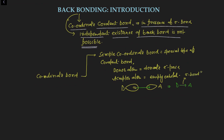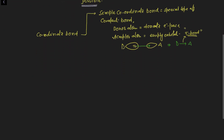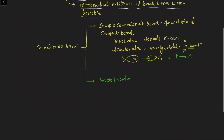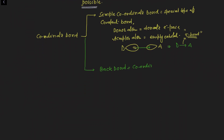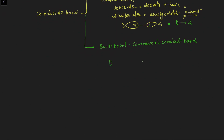The second type of coordinate bond is back bonding. A back bond is a coordinate covalent bond that always forms between two atoms in the presence of a sigma bond. Suppose this is the donor atom and this is the acceptor atom — there is a sigma bond between them. The donor atom has a lone pair and the acceptor has an empty orbital, so the donor donates its electrons. This results in a pi bond — back bonding has pi nature.